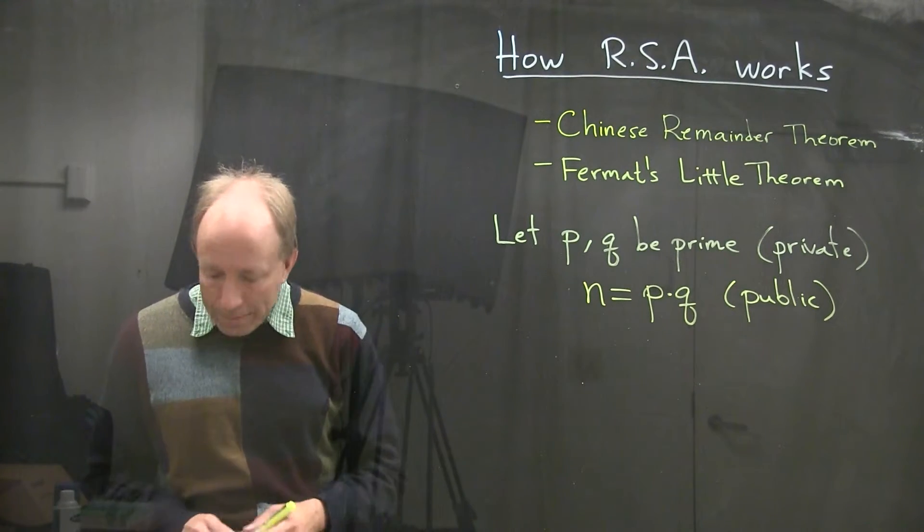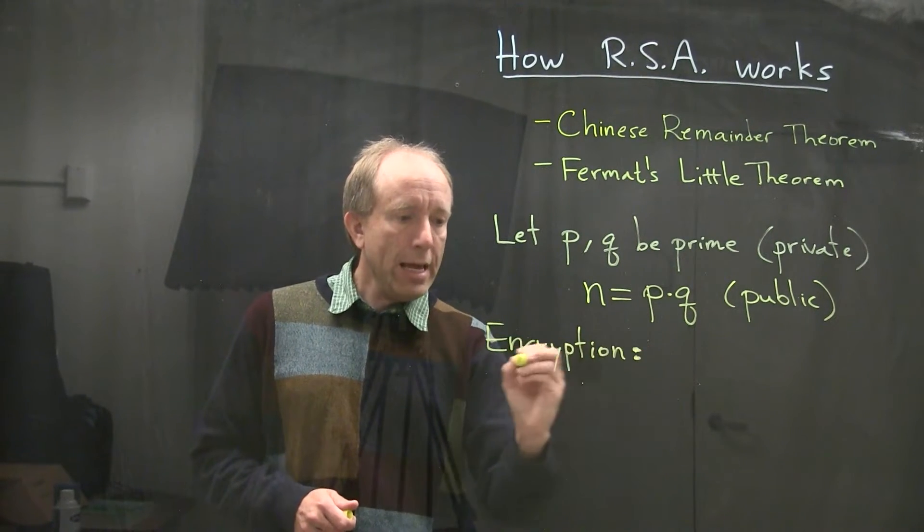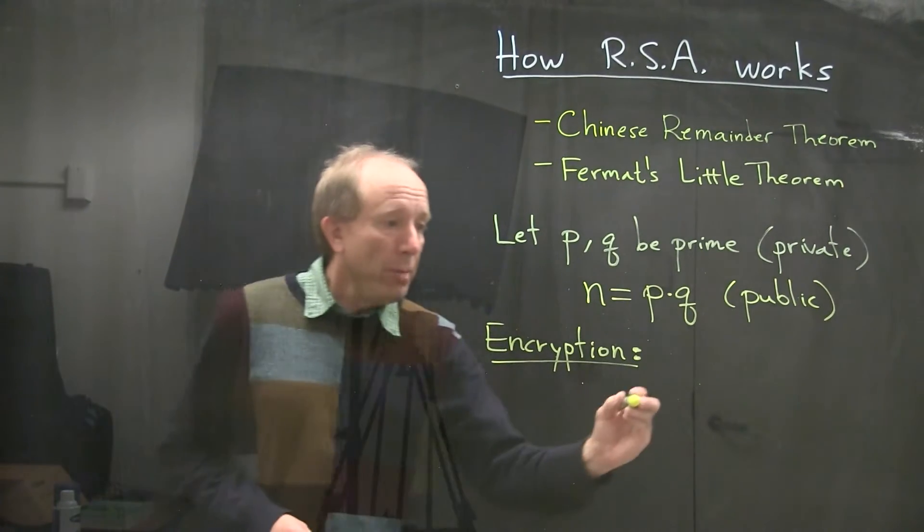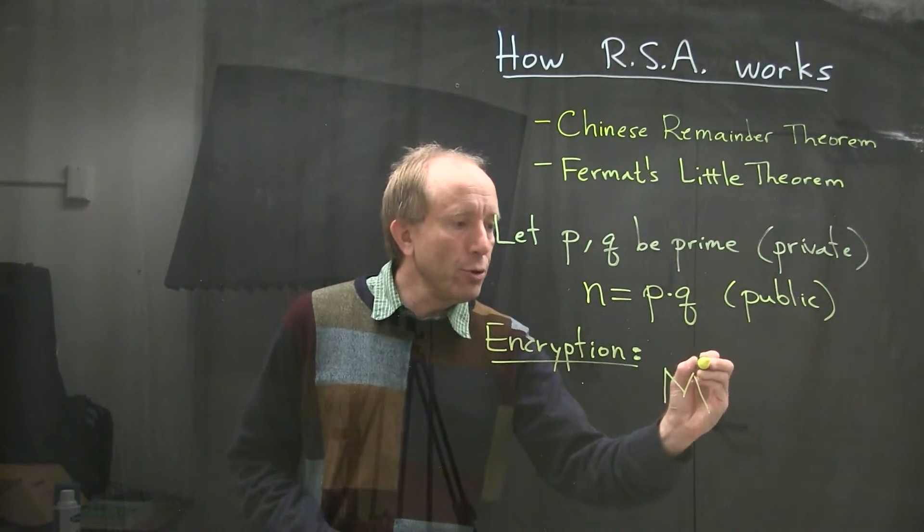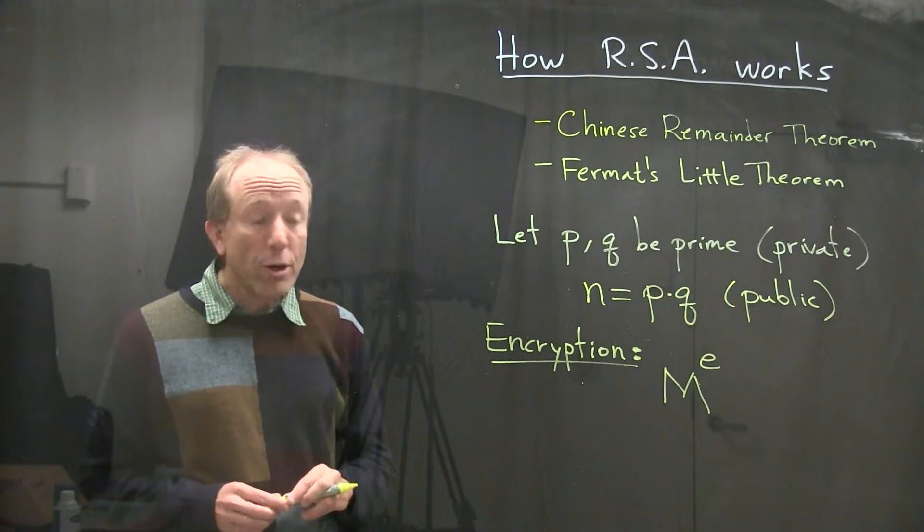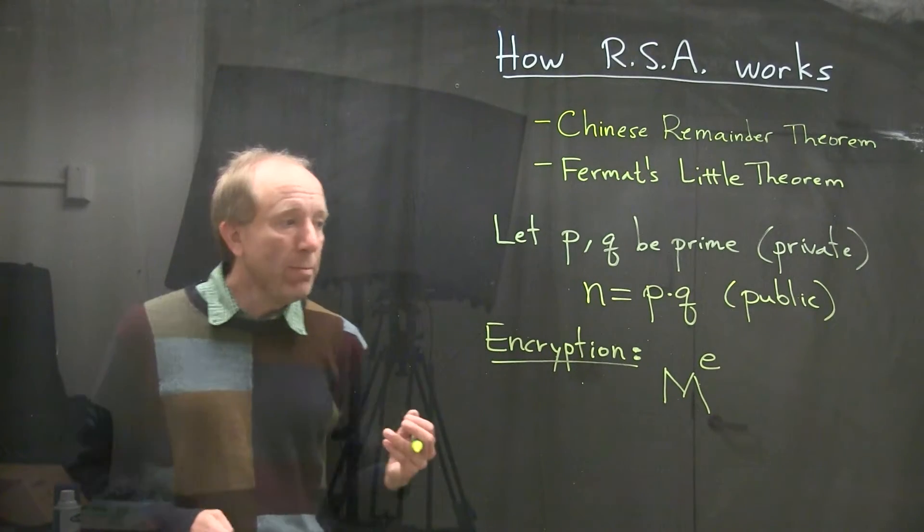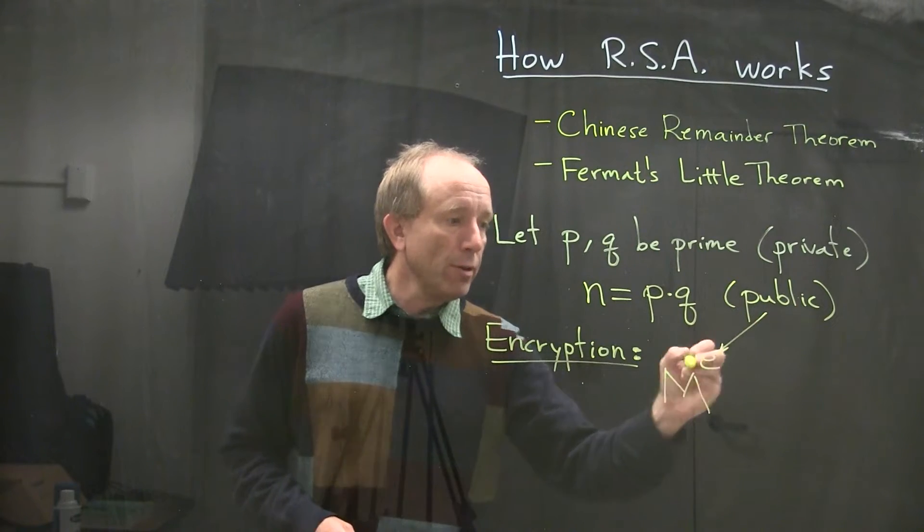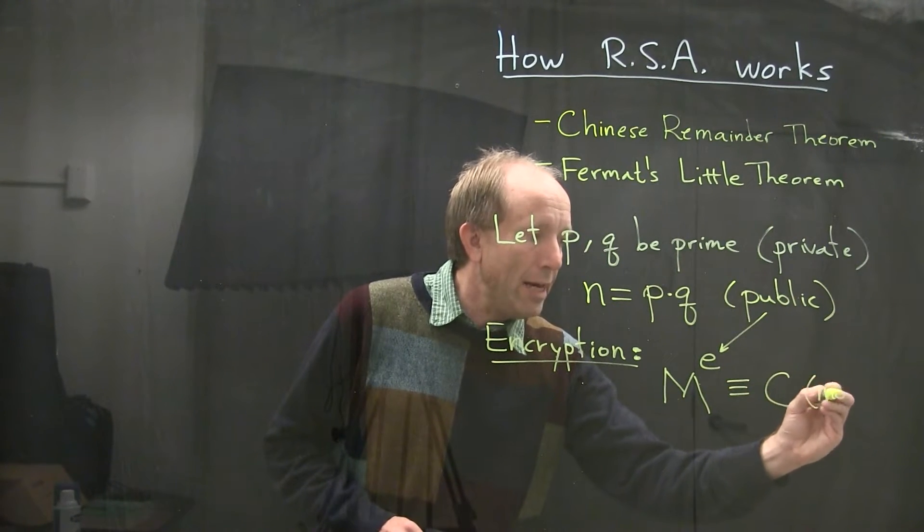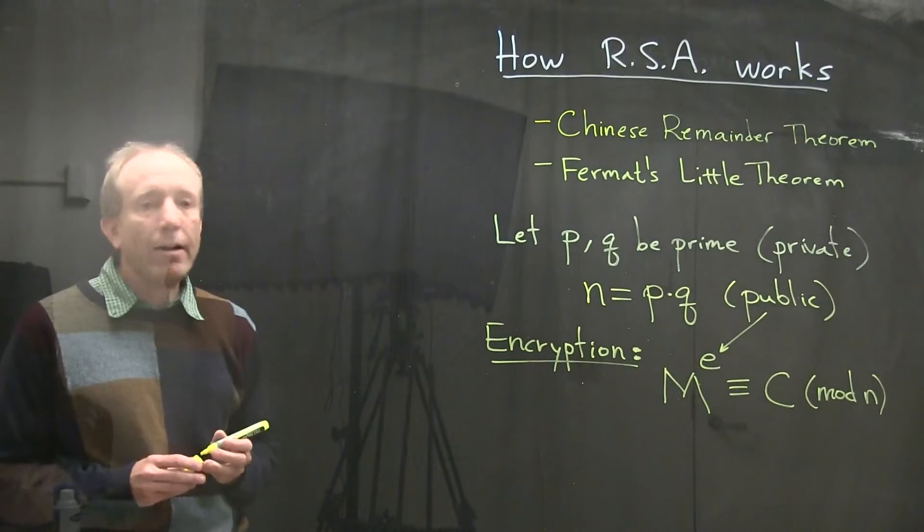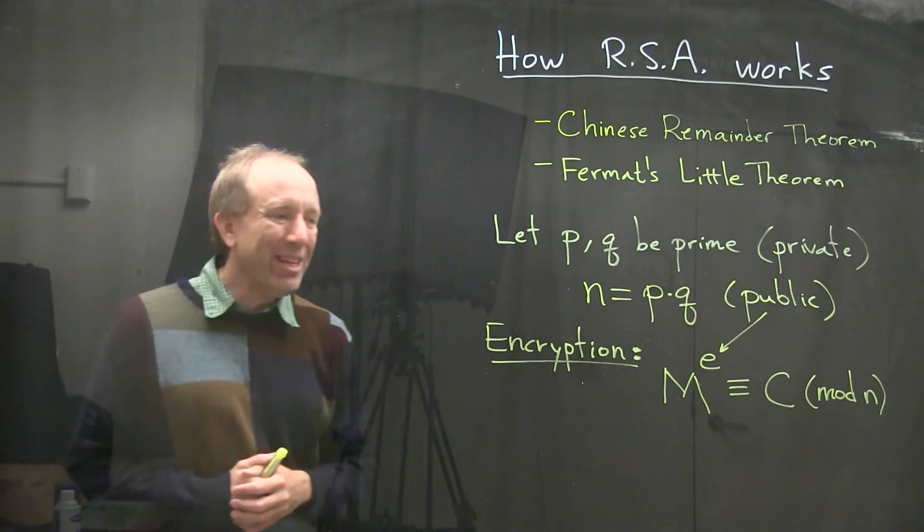The way that this is done, in other words, the encryption process is done by taking some numerical equivalent of your message, I'll call it capital M, and raising it to what is often referred to as an encryption exponent E. And I should also mention that E is also a public value. Everybody knows the value of not only N, but also E. And what we do is we reduce this in mod N to some value C. And C is the ciphertext, the coded version of the original message M.